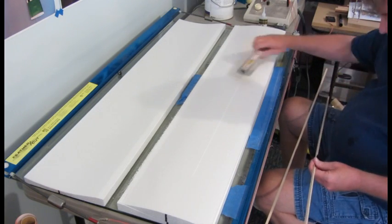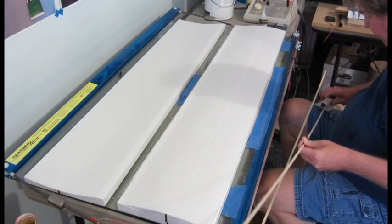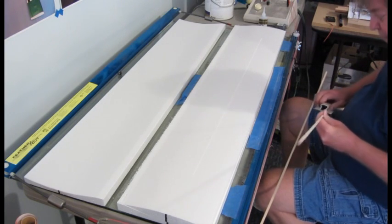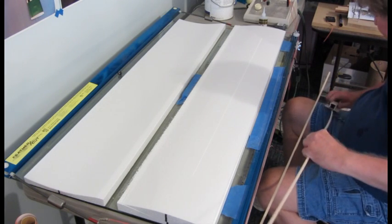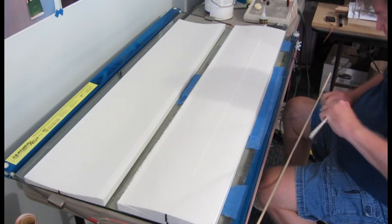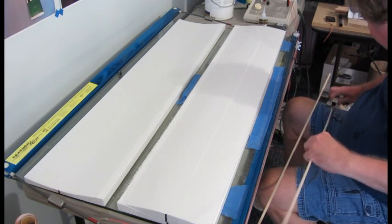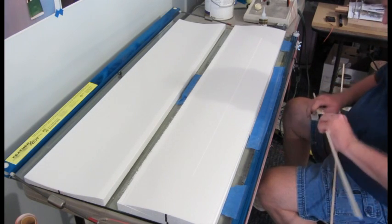So I take a sanding block and hit the rough edges. All you're trying to do is knock the sharp edge off, it's not critical.